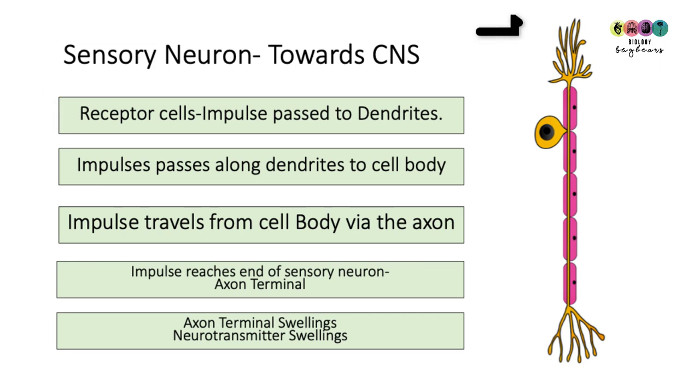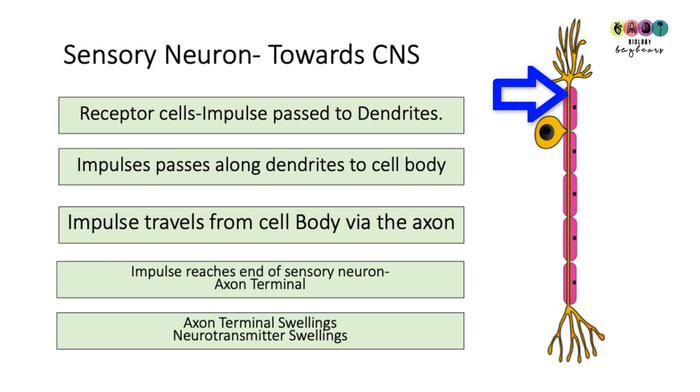The impulse gets passed to the dendrites at the top of the sensory neuron. The electrical impulse then passes down one main dendrite towards the cell body.